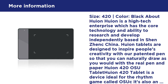The Huion 420 OSU tablet is a device ideal for the rhythm game called OSU. It's also an entry-level graphic designing tool that can be used for casual artworks and media work. You can use it to sign or markup documents in Microsoft Word or Adobe PDF Reader.